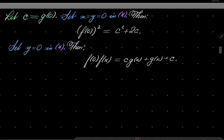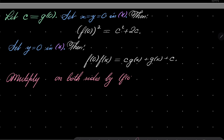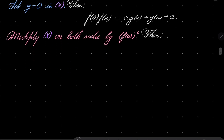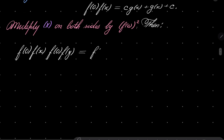Now what I wish to do is multiply condition asterisk on both sides by f(0)². Then on the left hand side we can write f(0)·f(x) times f(0)·f(y), and on the right hand side we can write f(0)² times [g(x)·g(y) + g(x) + g(y)].